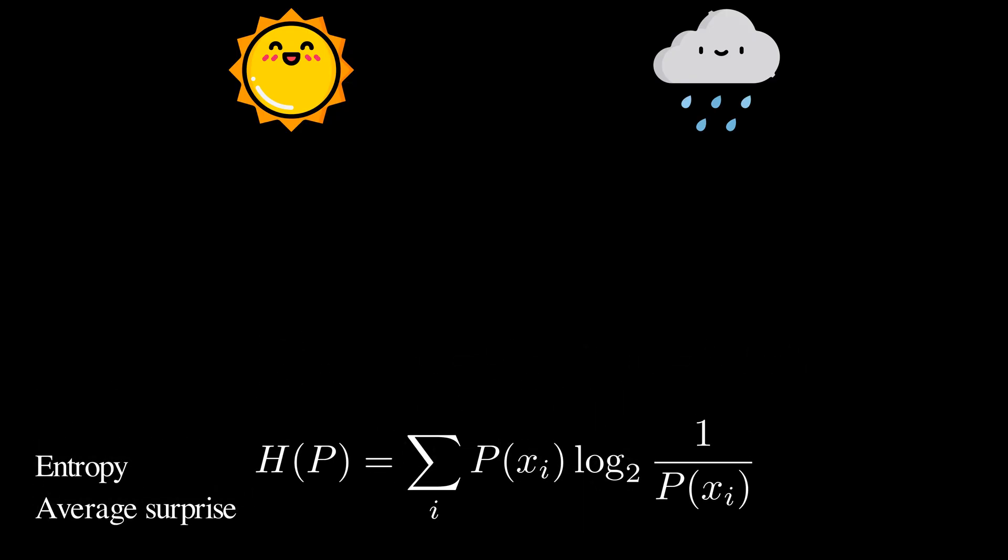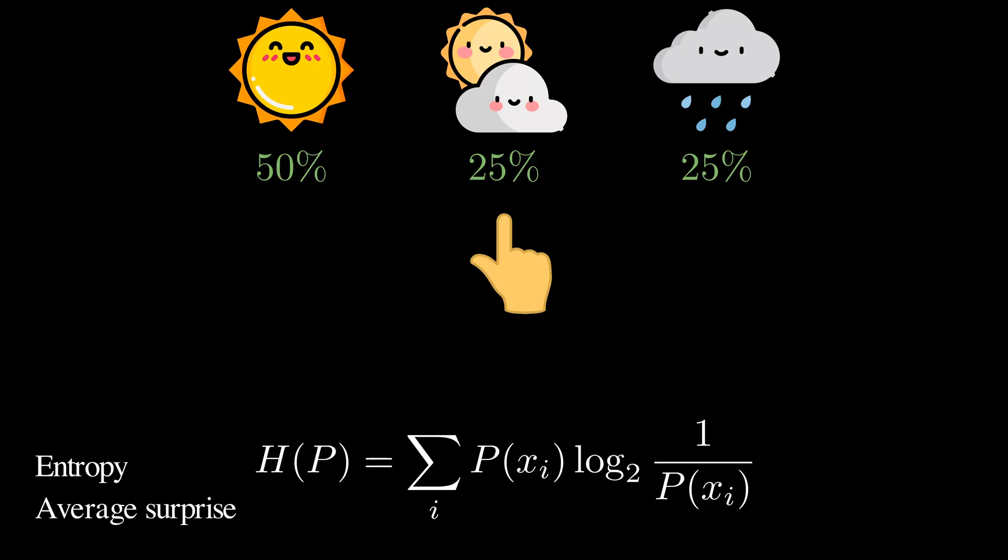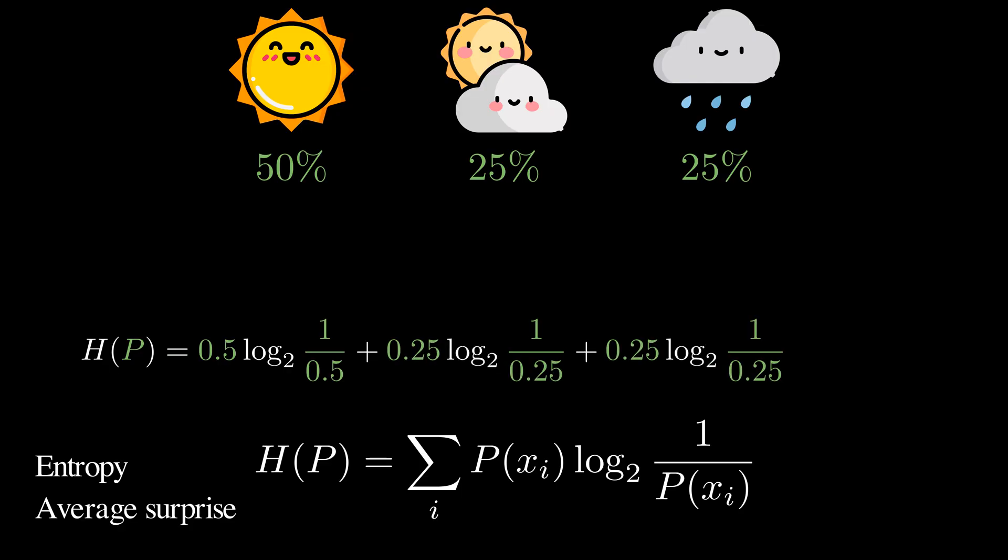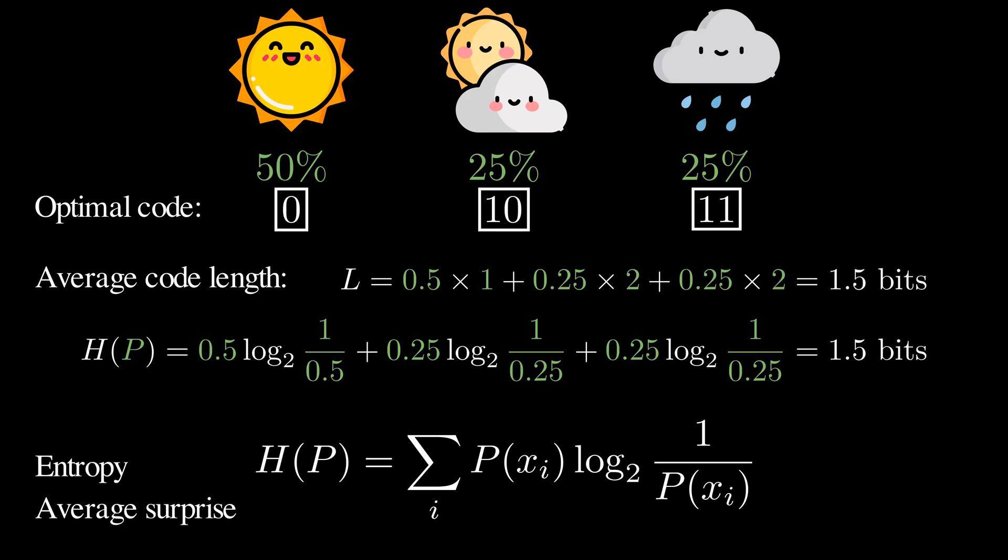Let's extend the example by adding a cloudy day. Suppose the forecast says 50% sunny, 25% cloudy, and 25% a rainy day. Now the entropy is the sum of three terms. It's 1.5 bits of information. What does that mean? It means that we can encode the outcome with an average of 1.5 bits. We label the event as 1s and 0s to describe the outcomes. As the sunny day is more probable, we assign it to a shorter code. We assign 1,0 and 1,1 as the code for the other two outcomes. So on average, the code length is 1.5 bits.